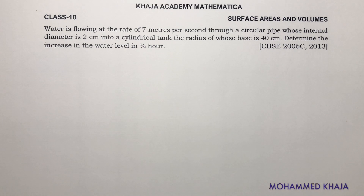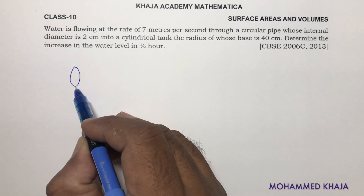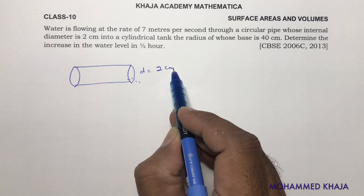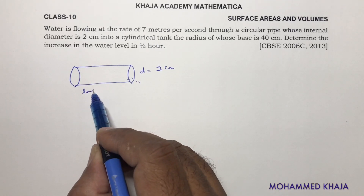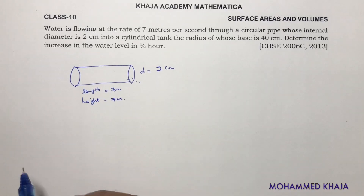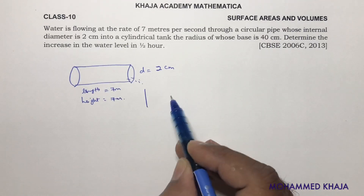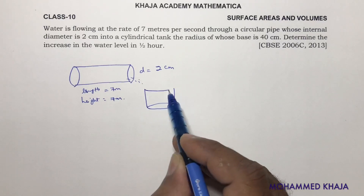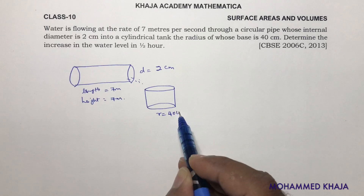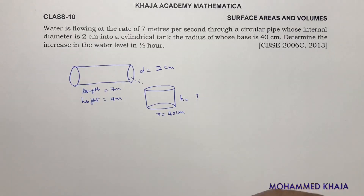Water is flowing at a rate of 7 meters per second through a circular pipe whose internal diameter is 2 centimeters. The length here will be 7 meters, which is nothing but the height of the cylinder. This water flows into a cylindrical tank — so water is going from one cylinder to another — whose radius of the base is 40 centimeters. We need to determine the increase in the water level, i.e., to what height the water rises in half an hour.